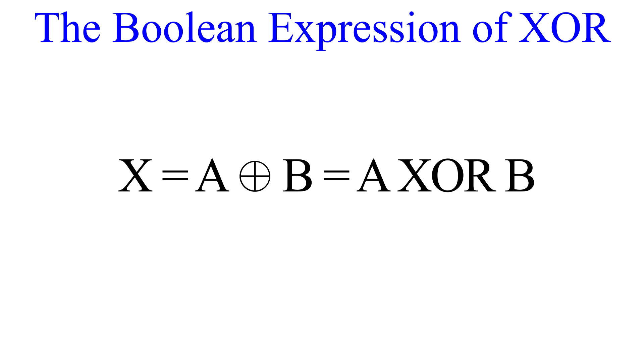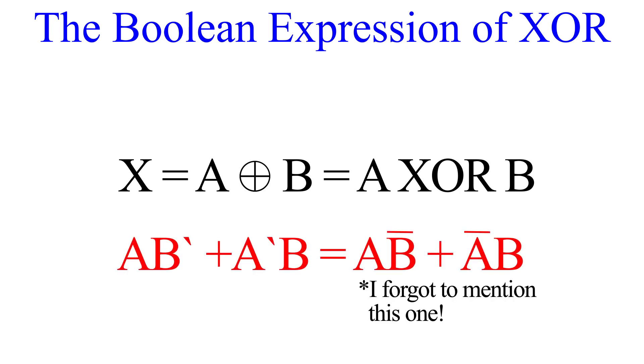But there's also one more way to represent XOR in Boolean. We can also write AB prime, which is an apostrophe, plus A prime B. Just take note of this for now. We're going to cover how and why this works later on in Unit 4, when we dive deeper into Boolean algebra.